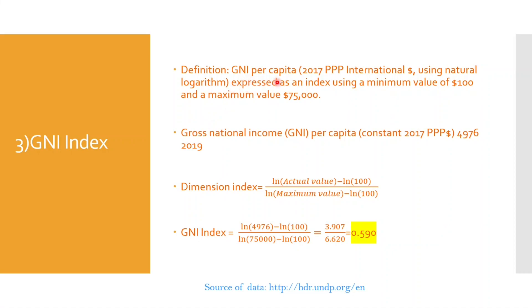The third component is the GNI Index. As per UNDP, GNI per capita is based on 2017 purchasing power parity in international US dollars, and uses a natural logarithm expressed as an index with a minimum value of $100 and a maximum value of $75,000.